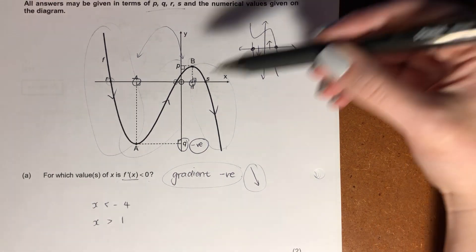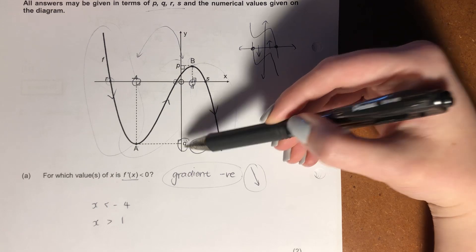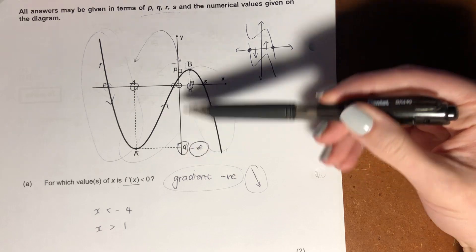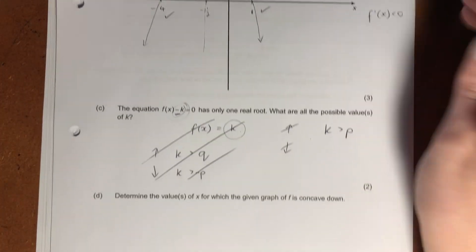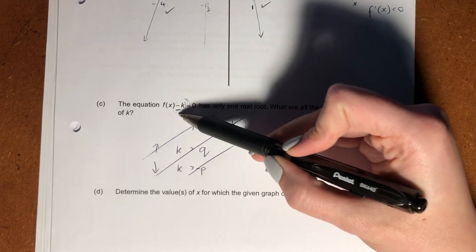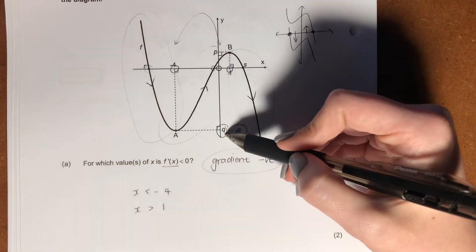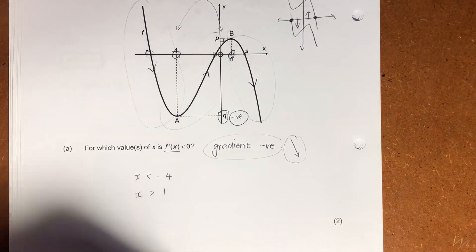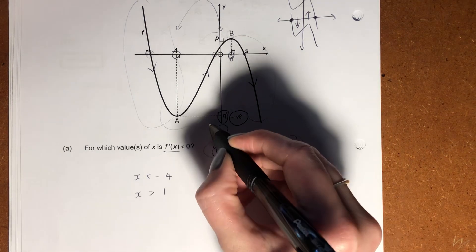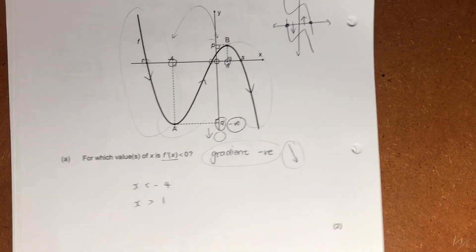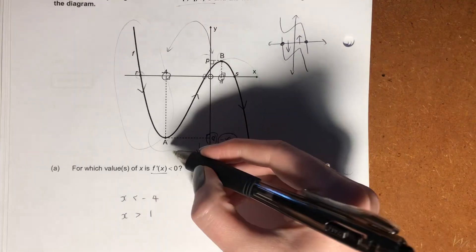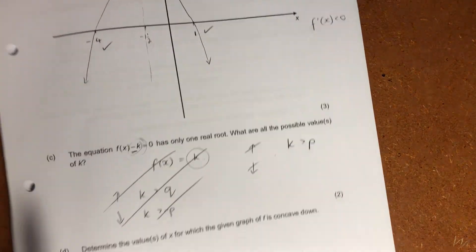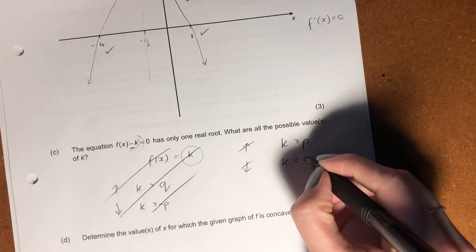The second condition is where we move the graph up, and we're looking at q. We know that in order for k to move up, because it's negative here already — it's already a subtraction — and we know that q is also a subtraction. Those two negatives, when you put them together, are going to be a positive. So if I have any negative number here that is less than q, when I put it in it becomes a plus, and it will bounce this a value above the x-axis. So my second condition is where k has to be less than q.